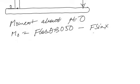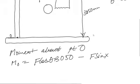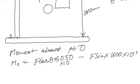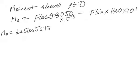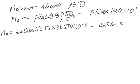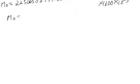The perpendicular distance for the Fsinθ term is 900 + 700 = 1600 mm. Substituting all values: 225 × cos53.13° × 3050 × 10⁻³ − 225 × sin53.13° × 1600 × 10⁻³, the moment about O comes out to be 123.751 Nm.